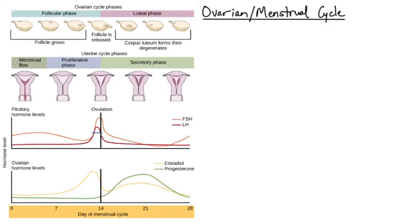In this video we're taking a look at the ovarian and menstrual cycle. There's a diagram on the left that we're going to use, and on the right a flow chart that will help us see the cause and effect relationship in each stage of the process.